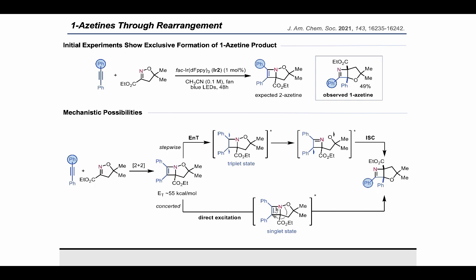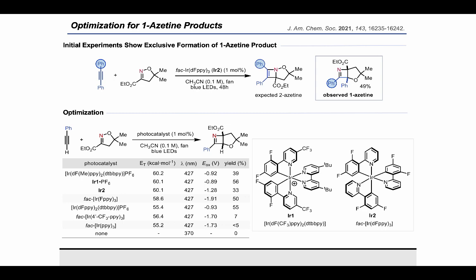We also could not rule out the possibility that this intermediate 2-azetine could be excited by direct excitation and undergo a concerted rearrangement. We were really excited by the formation of this 1-azetine product, and so we optimized the reaction for its formation. We found that we could use phenylacetylene as our alkyne and still get the rearranged 1-azetine product due to the presence of a styrene in the theoretical 2-azetine intermediate. Optimization led us to identify the catalyst labeled as Ir1 as our optimal catalyst. Though our highest NMR yield for this substrate was a moderate 56%, we were still happy with this given the paucity of methods to access azetines.